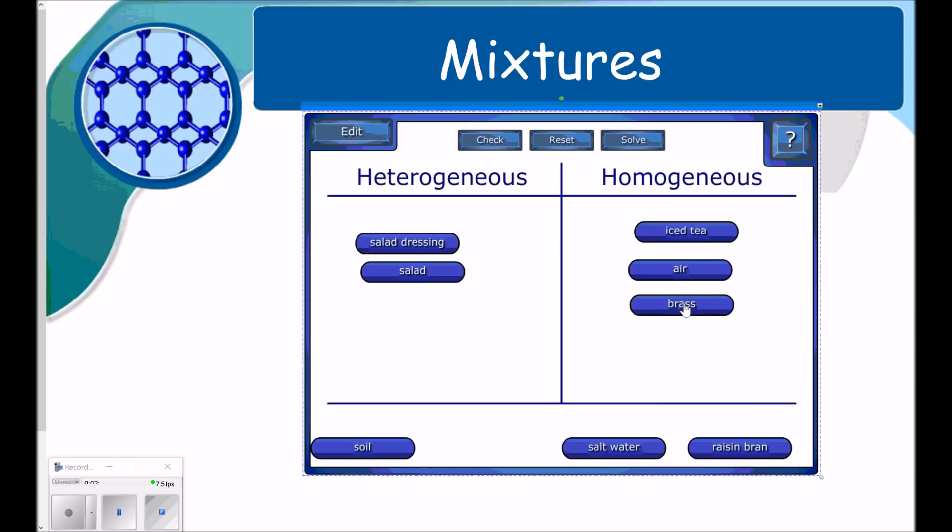Brass, it's an alloy, so it looks like one thing, but it's two different metals that are melted together. Raisin bran, you can see the different pieces, so it's heterogeneous. Soil, I can see the different parts in the soil. And lastly, we've got salt water, which is homogeneous because it looks like one thing. You can't see that there's salt dissolved in the water.